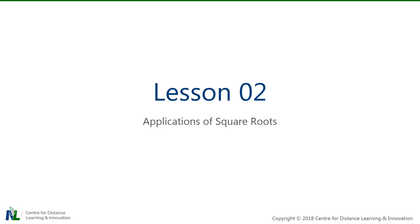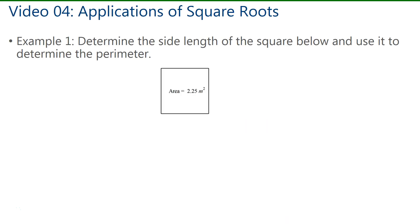Welcome to lesson 2 on applications of square roots. For the first example, we have to determine the side length of the square and then use it to determine the perimeter. Now if we're given the area, the side length can be found by determining the square root of the area.